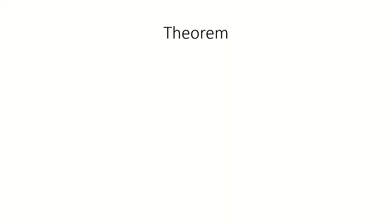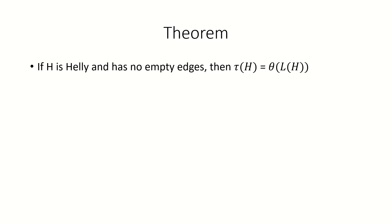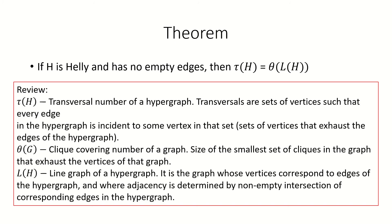Moving on, let's look at a theorem about heli hypergraphs. The theorem is: if a hypergraph H is heli and has no empty edges, then the transversal number of H equals the clique-covering number of its line graph. To review, the transversal number is the size of the smallest set of vertices that contains a vertex from each edge in the hypergraph. This is known as a transversal.